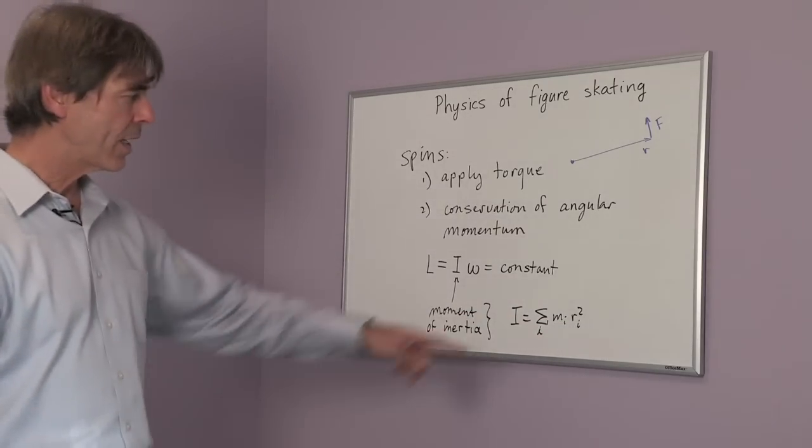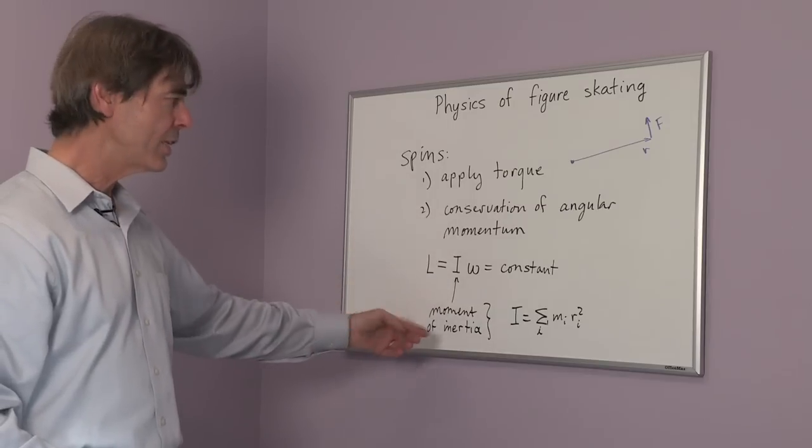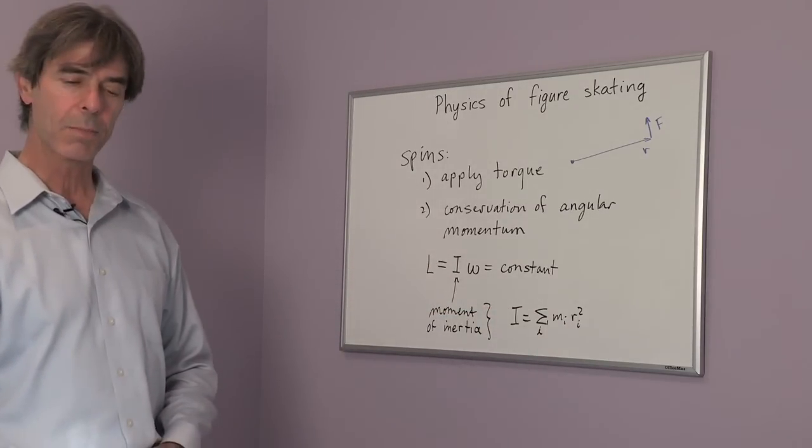So if I have a large radius, then my moment of inertia is large. If I have a small radius, the moment of inertia becomes smaller.